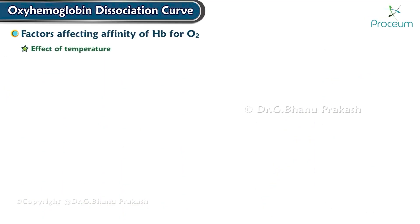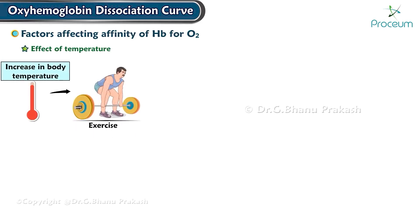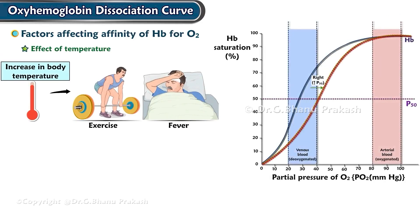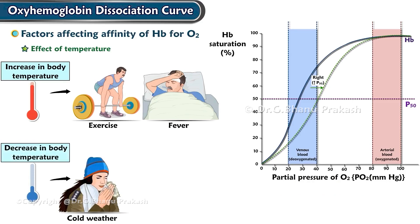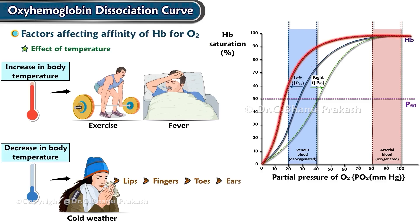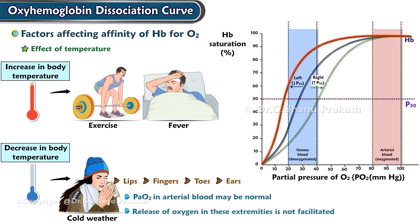An increase in body temperature, as occurs during exercise or fever, shifts the oxyhemoglobin dissociation curve to the right and enables more oxygen to be released to tissues, where it is needed because demand increases. During cold weather, a decrease in body temperature, especially in the extremities, shifts the oxygen dissociation curve to the left. In this instance, partial pressure of oxygen in the arterial blood may be normal, but release of oxygen in these extremities is not facilitated.